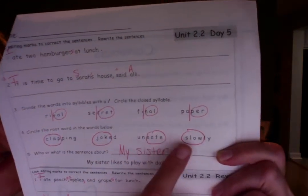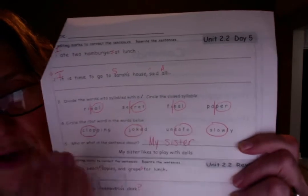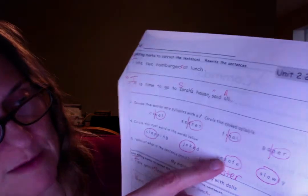Joke. J-O-K-E. Safe. S-A-F-E. And slow. S-L-O-W. Those should be circled. They're the root words. Sometimes they have suffixes at the end and sometimes they have prefixes at the beginning. So you have to pay attention to that.